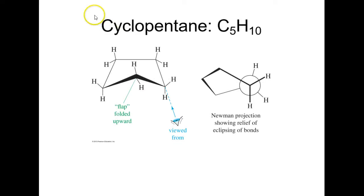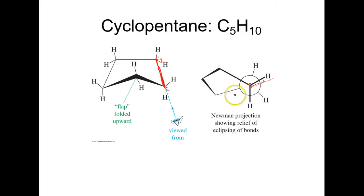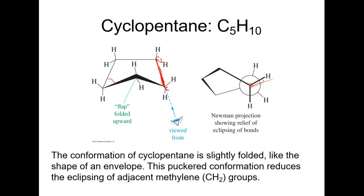Cyclopentane has a really folded conformation. Looking down the bond — C1 to C2 — you can see the hydrogens are not quite staggered, but pretty close to almost fully staggered. By putting it in this conformation, the bond angles are now pretty close to 109.5 — I believe somewhere between 106 and 108. So it's still not perfect, but pretty close to the normal bond angle an sp3 carbon should have, and it also alleviates some of the eclipsed interactions. The puckered conformation reduces the eclipsing of adjacent methylene groups.